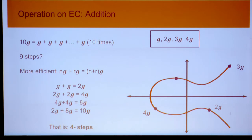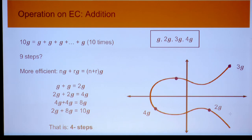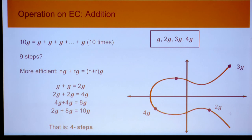The addition is done smartly. If I want to produce 10G, I won't add 1G nine times — I'll do it more efficiently. I take G and G to produce 2G, then 2G and 2G to give me 4G. Because the duplication operation costs just one addition operation, I can end up with 10G in four steps. In basic mathematics, nG plus rG equals (n+r)G. Even though it's elliptic curve addition rather than regular addition, NG plus RG equals N plus R times G.